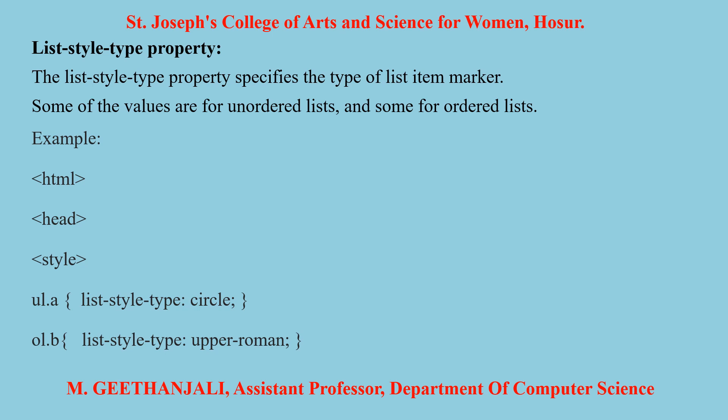This is the list-style-type property. It helps to specify the type of list item marker. There are some values for ordered list and some values for unordered list. In the example, the HTML head contains a style block: ul.a with list-style-type colon circle, and ul.b with list-style-type colon upper-roman. So ul.a is a class name for the unordered list and ul.b is a class name for the ordered list.